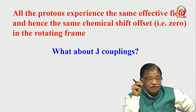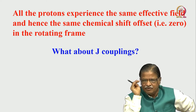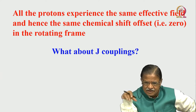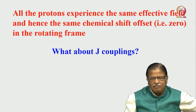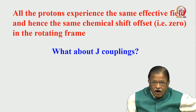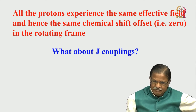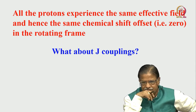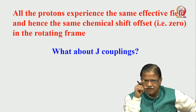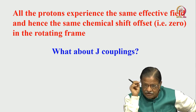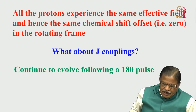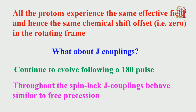There is no chemical shift evolution, and difference of chemical shifts is zero. Whatever the J coupling — remember in homonuclear spin echo, chemical shifts are refocused but not J couplings. J couplings always continue to evolve after the 180° pulse. So throughout the spin lock period, we have created a situation where chemical shift evolution is zero, but J coupling continuously evolves. It is similar to free precession during the spin lock period — there is only J coupling evolution and no chemical shift difference.